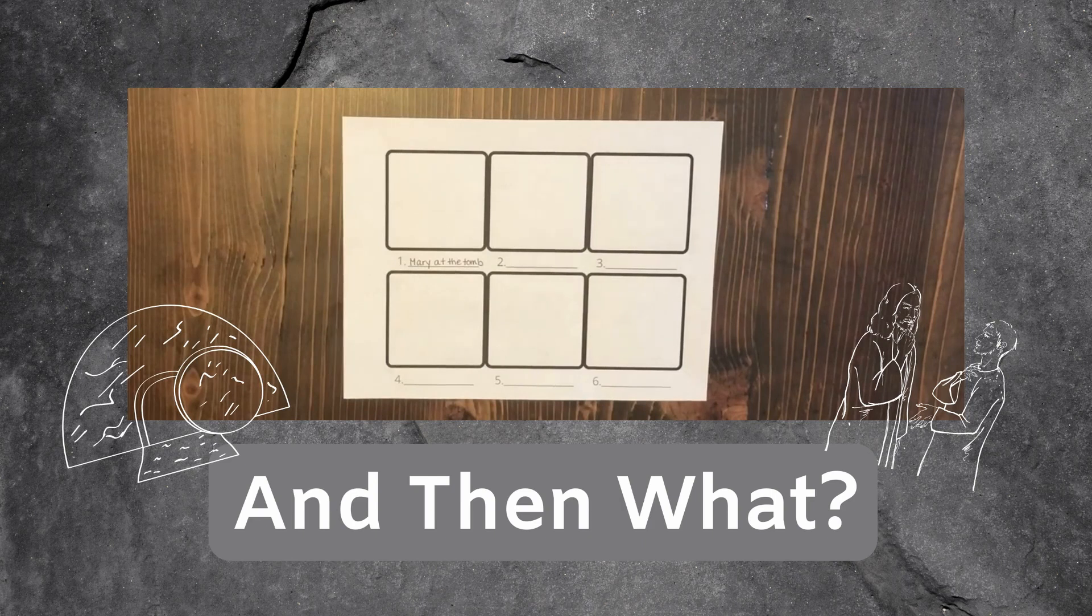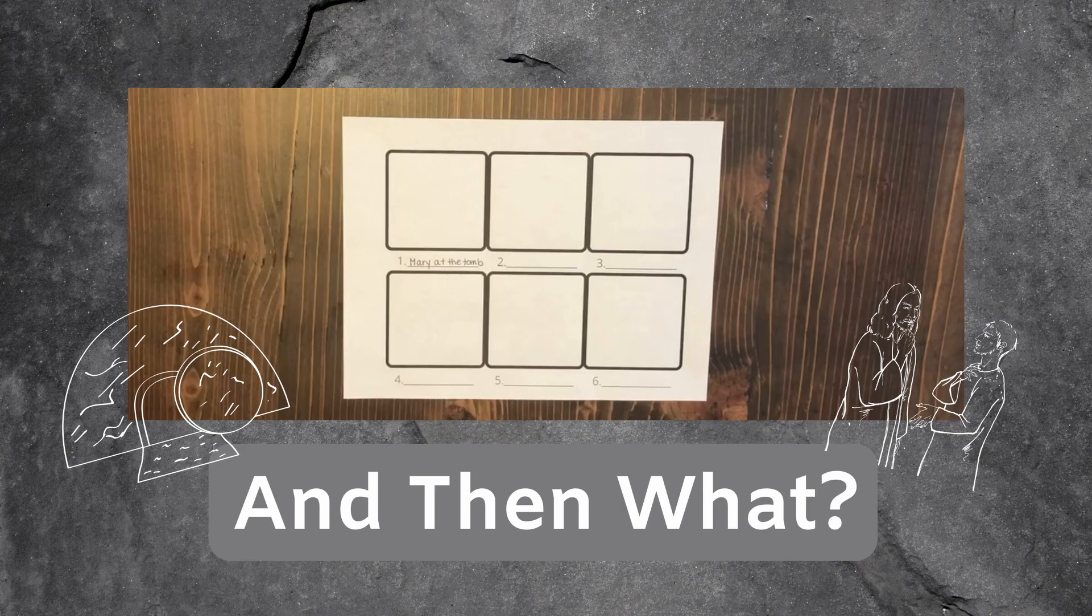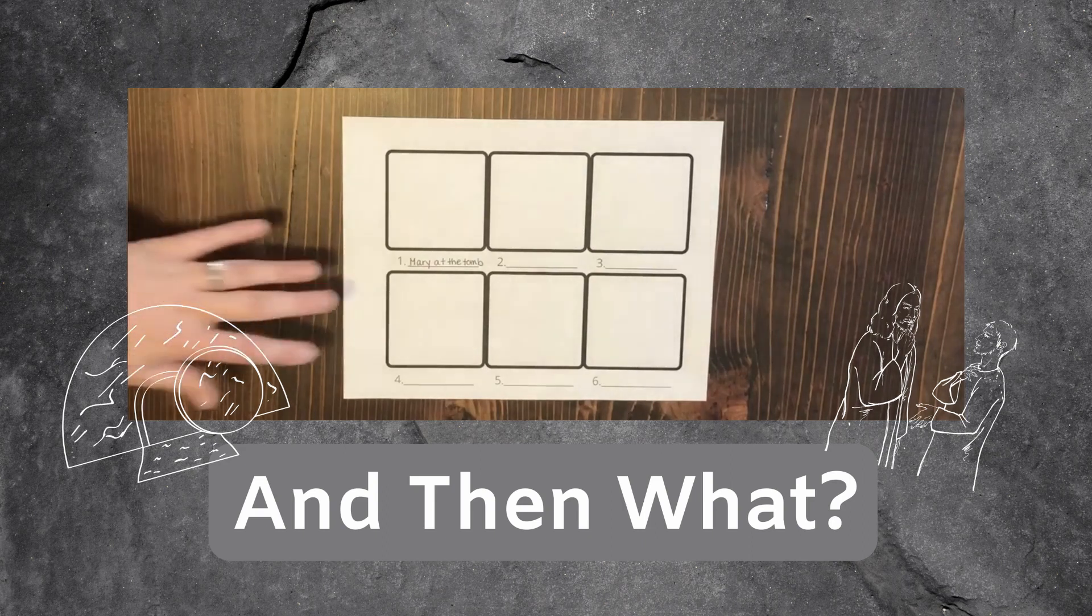Then, when you're all done talking about the events, give each person a blank storyboard like this one, or work on one together. Draw pictures for each part of the story.